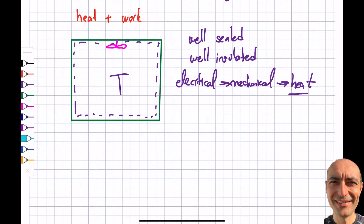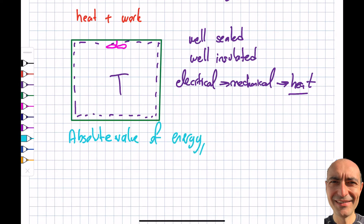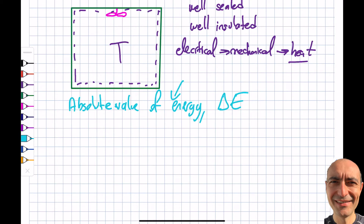I want to note something important: I don't really work with the absolute value of total energy in a system. What I am actually more interested in is the change in energy, ΔE. I can't really obtain absolute total energy in a practical sense. We're going to divide energy into two categories: macroscopic and microscopic. Two forms of macroscopic energy are kinetic energy and potential energy.